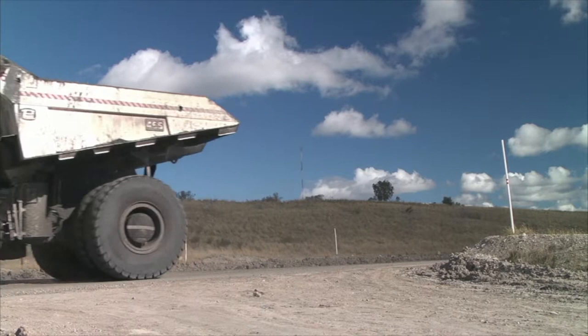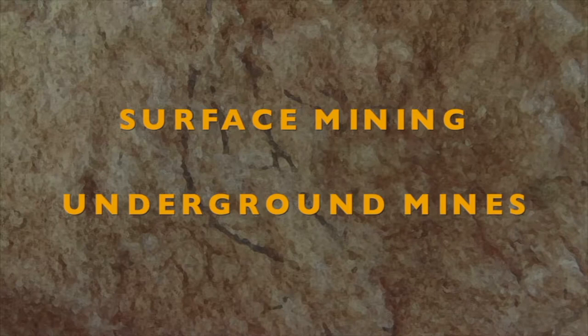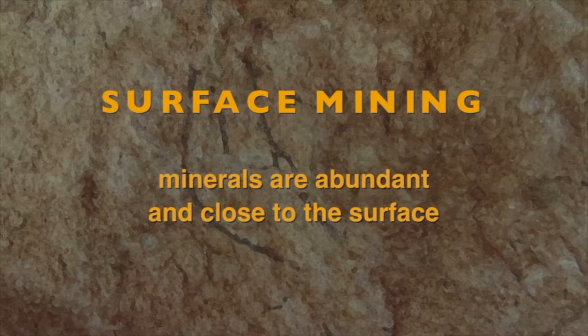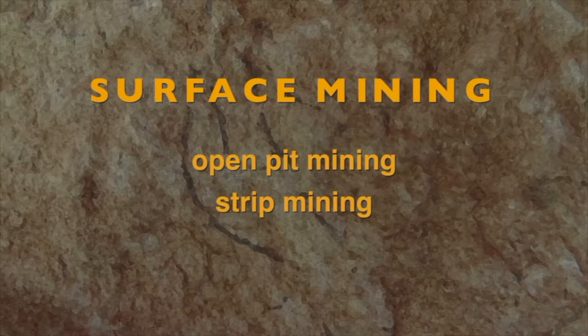Mining takes place throughout the world. There are two types of mining: surface mining and underground mines. Surface mining is used when minerals are abundant and close to the surface. There are three types of surface mines: open pit, strip, and quarry mining.